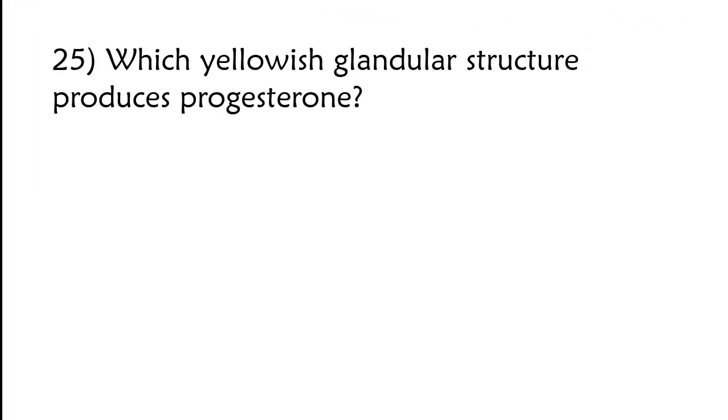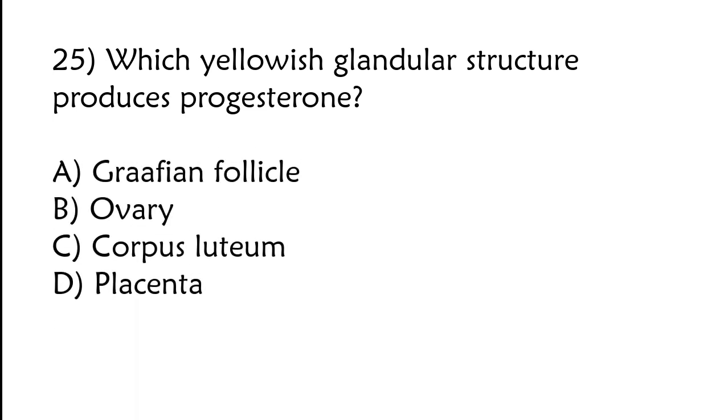Which yellowish glandular structure produces progesterone? Graafian follicle, ovary, corpus luteum, or placenta. The correct answer is option C, corpus luteum.